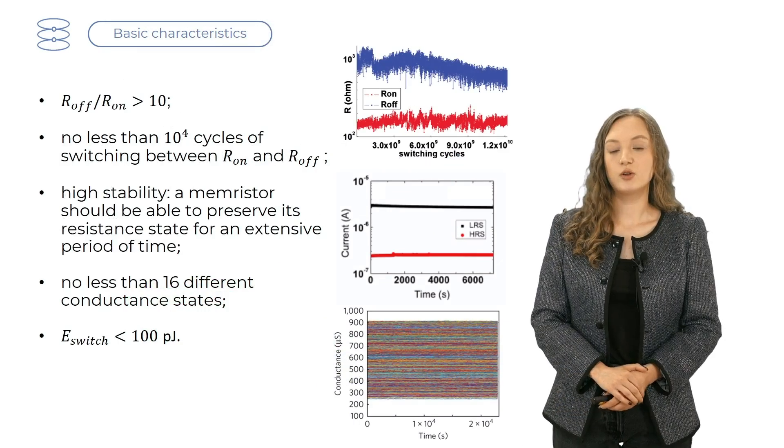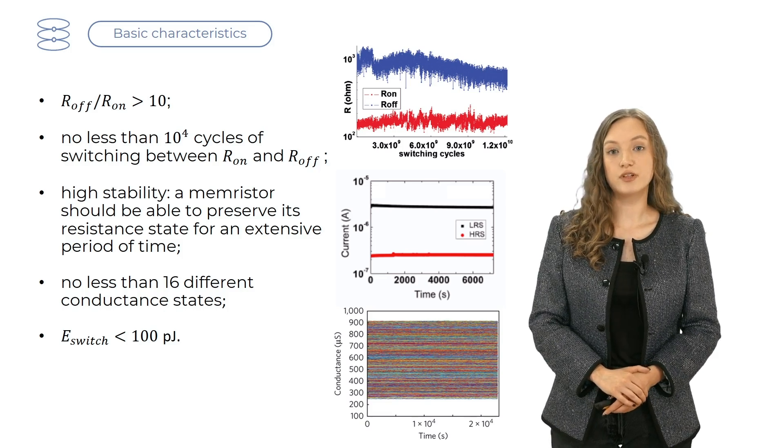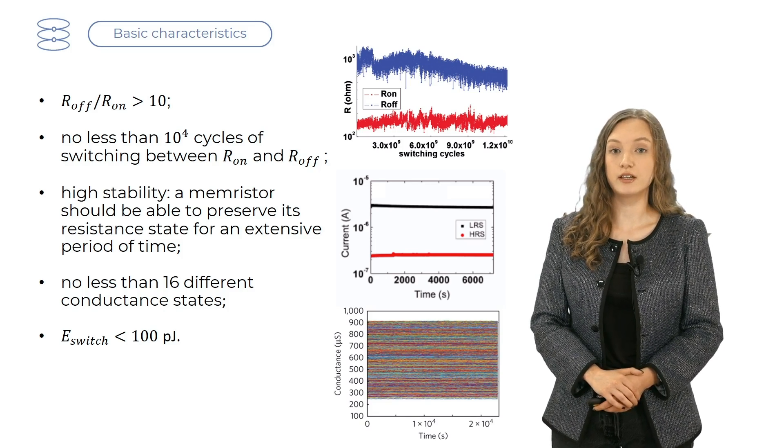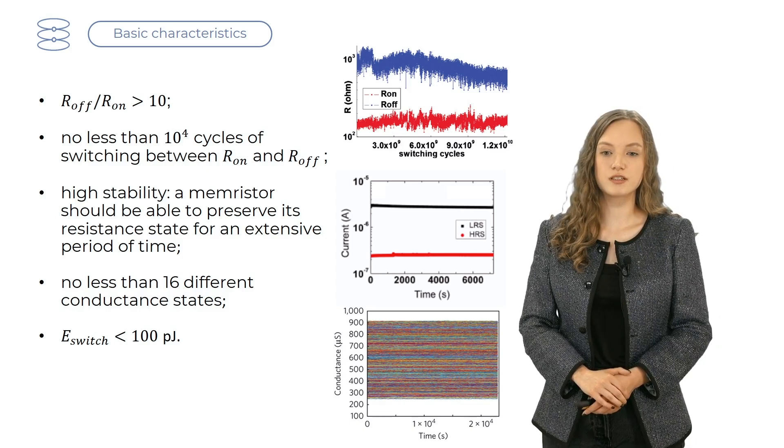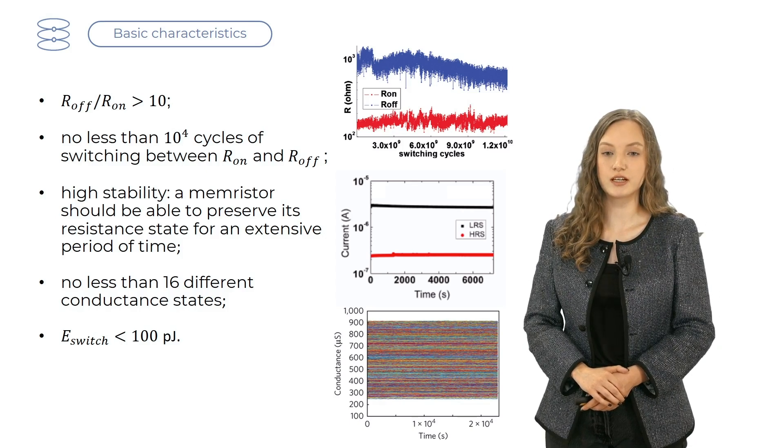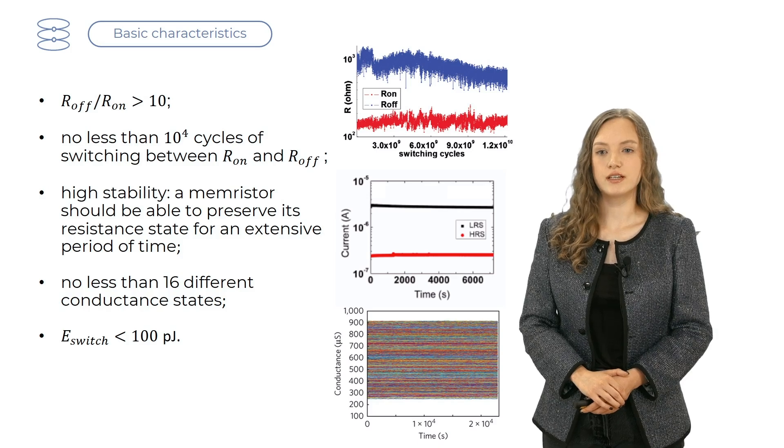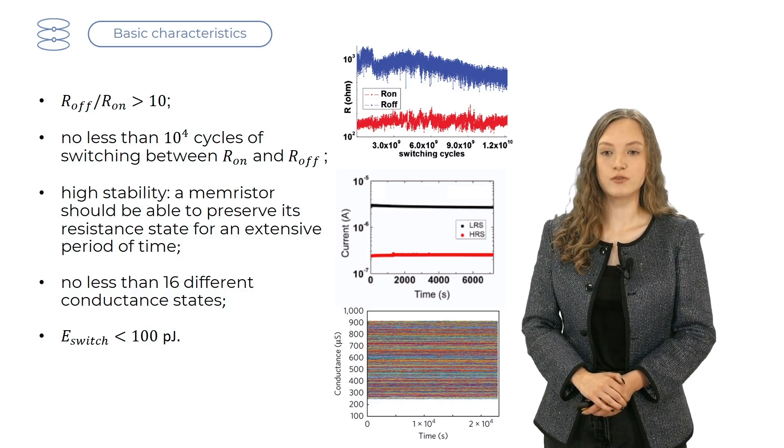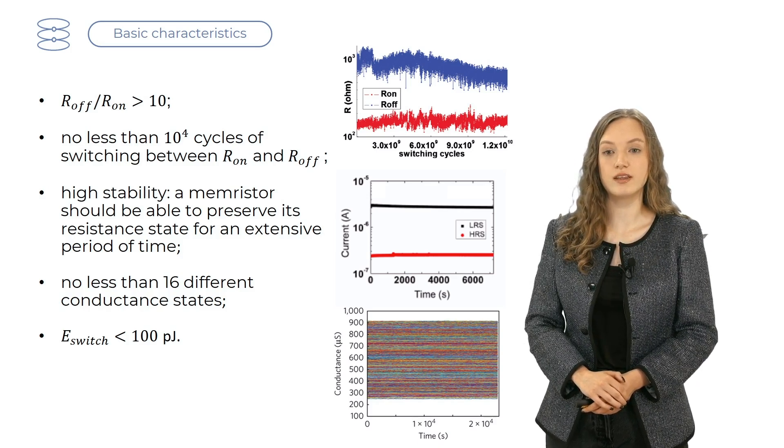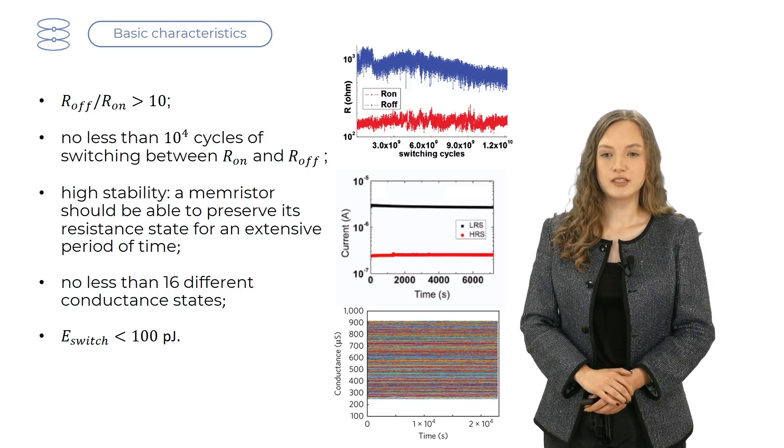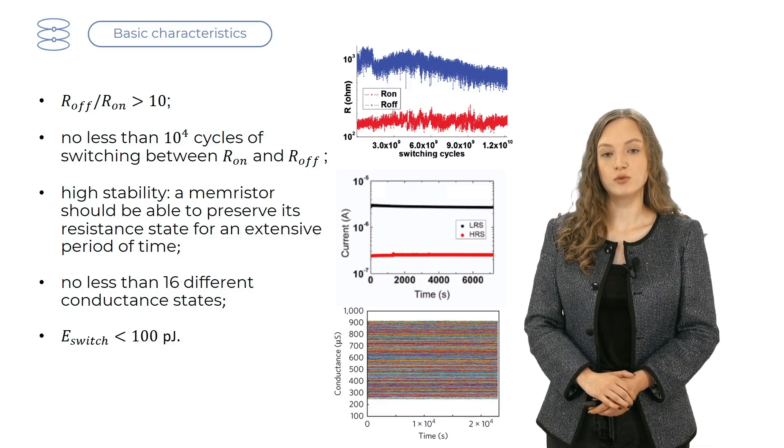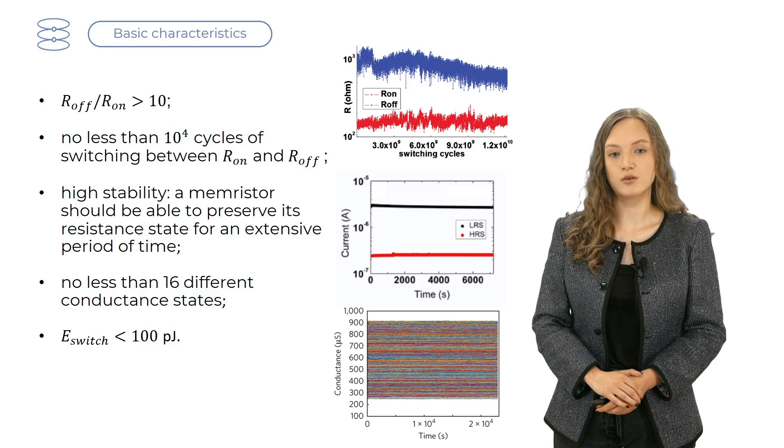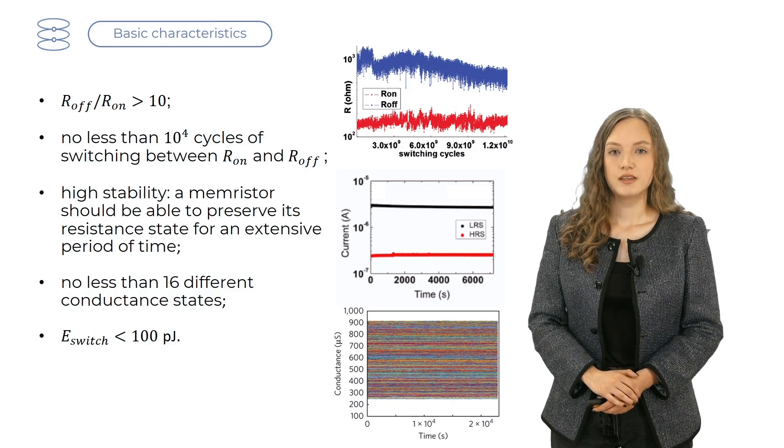Current memristors include a plethora of semiconducting films of metal oxide and organic compounds. There are several conditions a good memristor should satisfy. First is that the ratio of R_off to R_on should be greater than 10. That's because we need to distinguish well between the off and the on states.